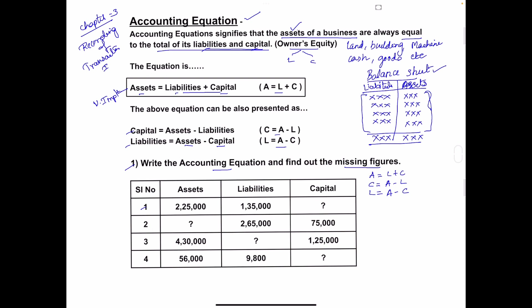In the first example, assets and liabilities are given and we have to calculate the capital. So we use the second equation: C = A − L. Assets are 2,25,000 minus liabilities of 1,35,000. So the capital amount is 90,000.